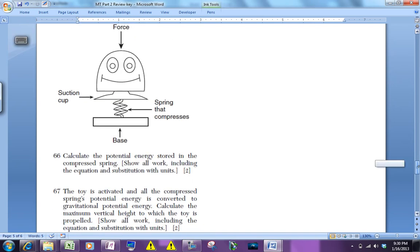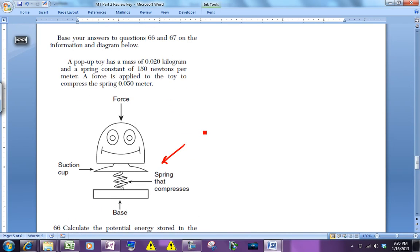The first question asks us to figure out how much potential energy is stored in this spring. To calculate the potential energy stored in the spring, we're going to use the one-half k x squared equation right from the reference table.